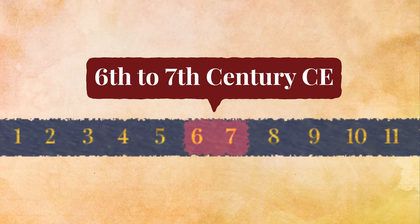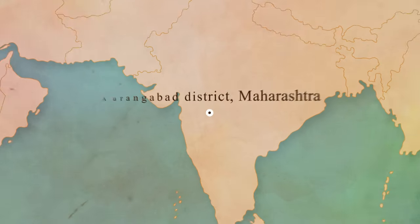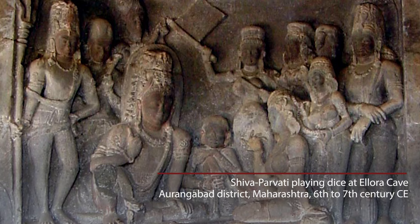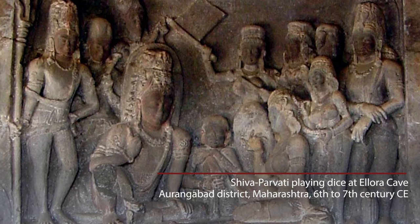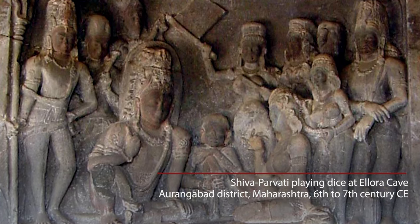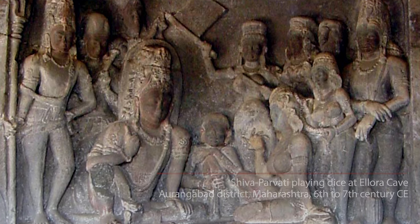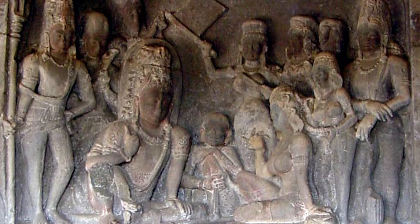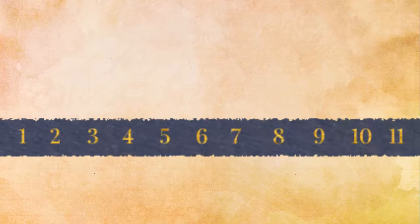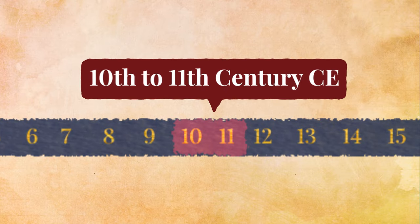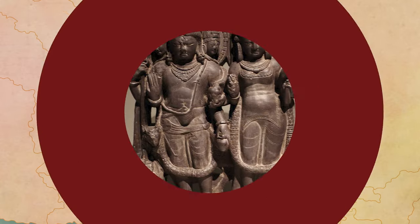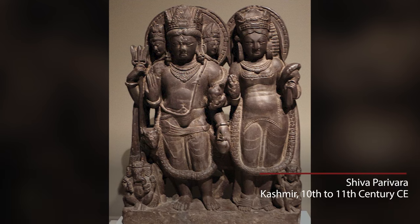In Ellora and in Elephanta, we find images of Shiva and Parvati as a married couple. So the idea of Shiva as a householder starts emerging 1500 years ago. By the 10th and 11th century, you have images in Kashmir showing Shiva as a family man.